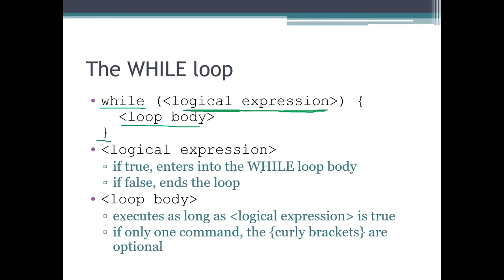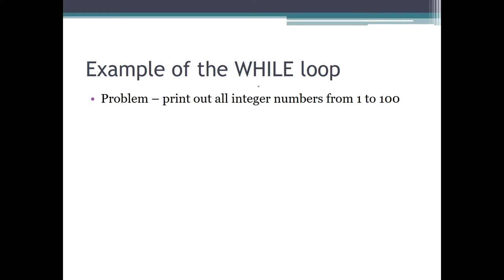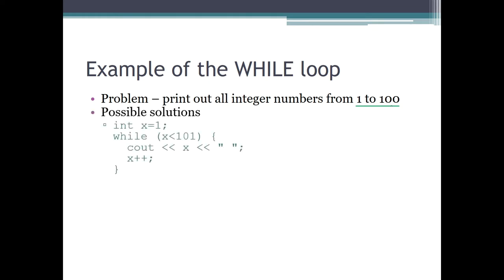Let's see an example — the same as before: print out all integer numbers from 1 to 100 — and some possible solutions using the while loop. If we compare this to the for loop solution from the previous lecture, we can see that the initialization command is done before the while loop, and the increment (the third component of the for loop) is placed as the last command of the while loop body.